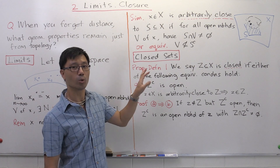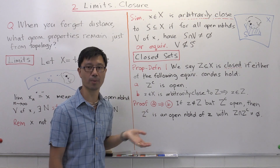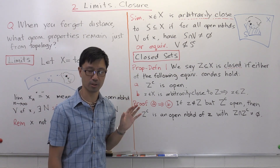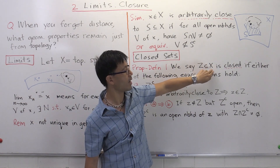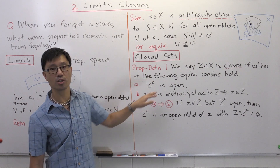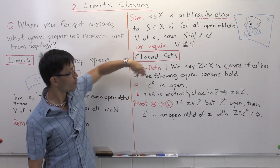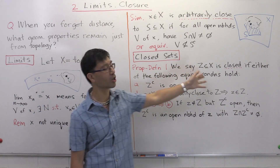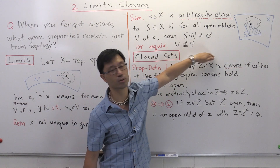The next thing I want to talk about is the notion of a closed set. You would have seen closed intervals in single variable calculus, and in complex analysis courses you'd have seen more generally what a closed set is. I want to show you that this is also a topological notion — something you can define on any topological space. Suppose Z is some subset of a topological space X. I'm going to define what it means for that set to be closed, using one of two equivalent conditions, A and B.